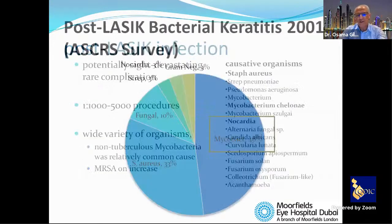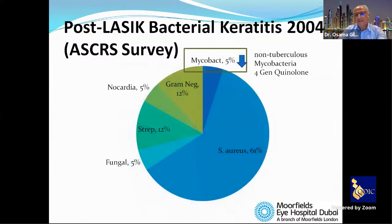Epidemiology is very important. In a 2001 survey by Asker looking at post-LASIK bacterial keratitis, mycobacteria accounted for almost 50% of infections. However, since the introduction of fourth-generation fluoroquinolones in 2004 — a game changer — mycobacteria dropped to around 5% while staphylococcal infections increased. By 2008, MRSA also increased.